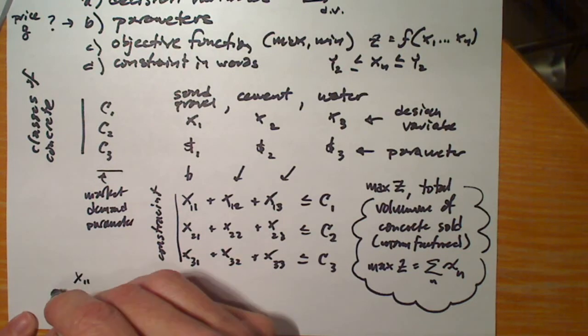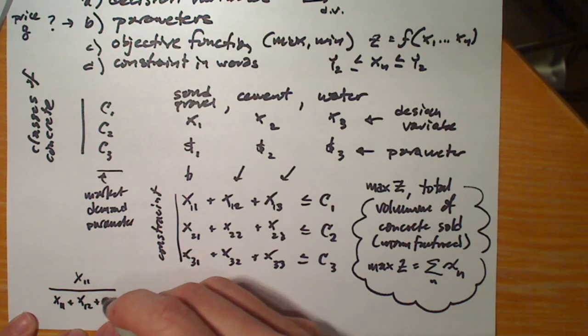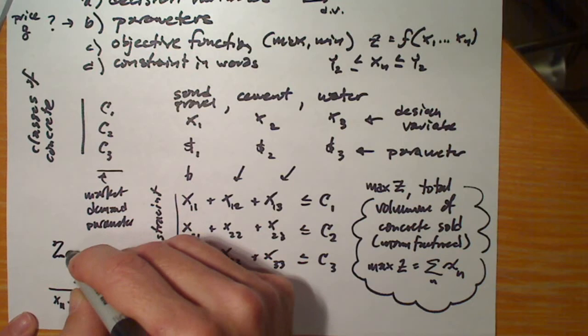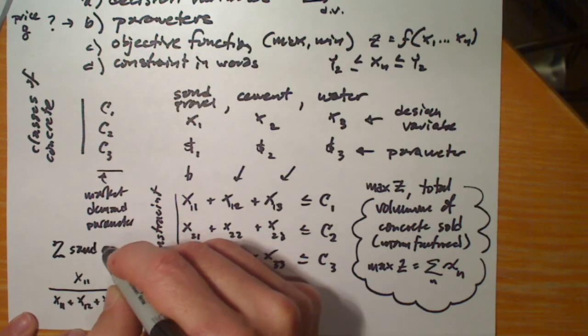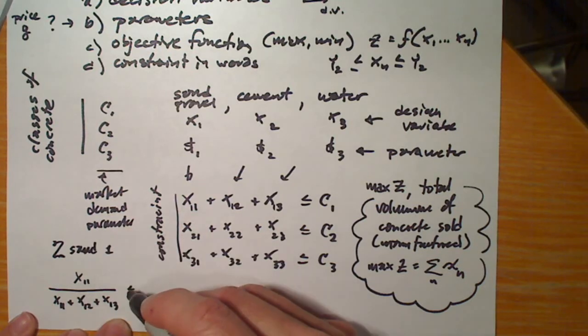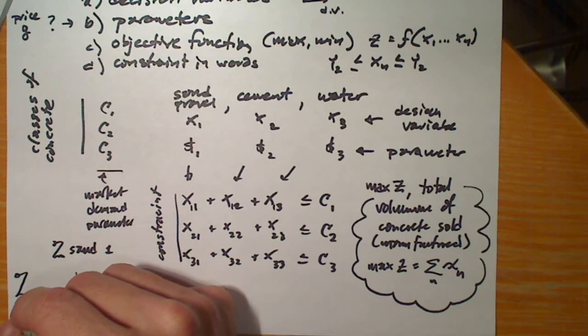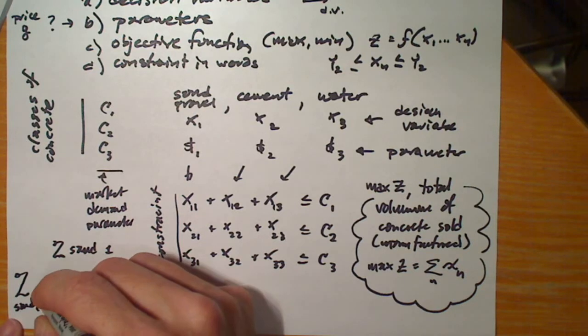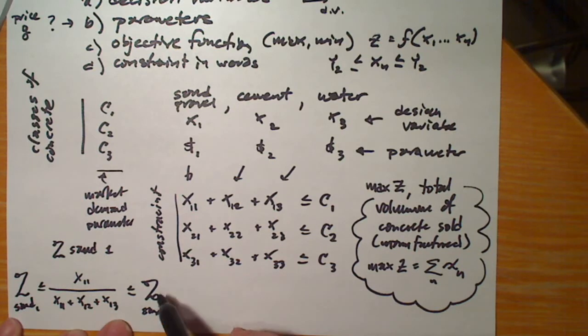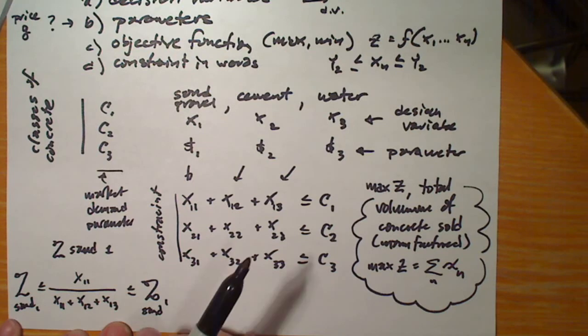So what are we saying? For example, x11 over x11 plus x12 plus x13 is the percentage of sand in mixed design 1. And it must be less than or equal to whatever the maximum sand percentage is and whatever the minimum sand percentage is for mixed design 1. The constraints for mixed design 2 and mixed design 3 would look exactly the same as this, but we would replace the indices for those mixed designs.